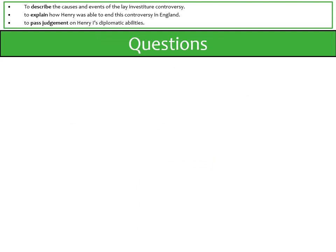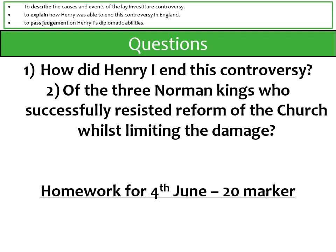To finish off, I've got a few questions I'd like you to think about. First, how did Henry I effectively end this controversy — was it down to his own skill, or was he forced into it? Second, of the three Norman kings who successfully resisted church reform, which of them was most successful whilst limiting the damage? So thinking about William I, William II, and Henry I — who resists reform of the church most successfully whilst minimizing the damage? It's a two-part question.